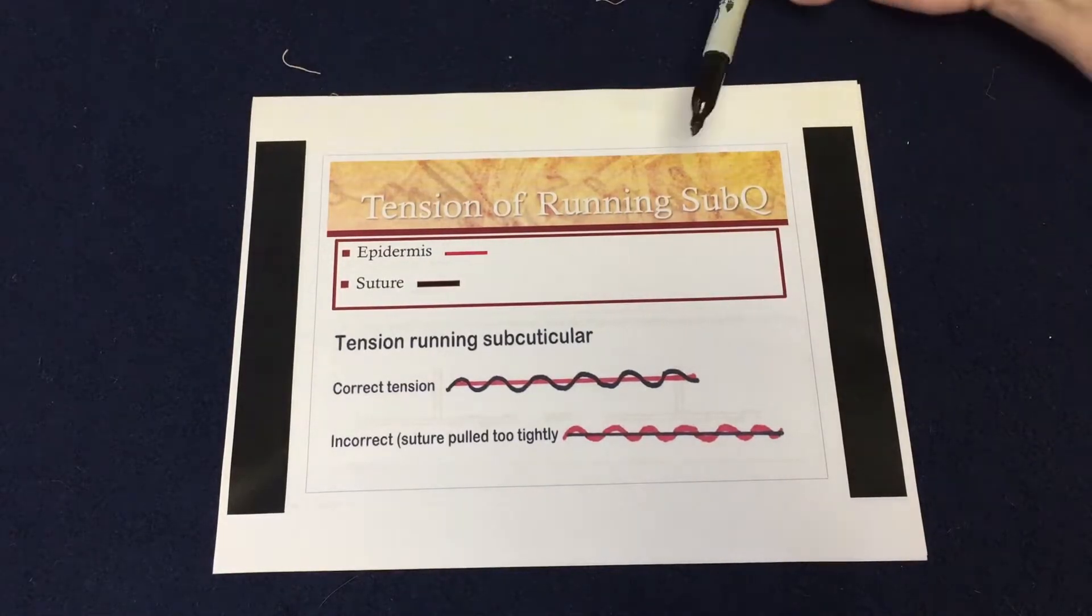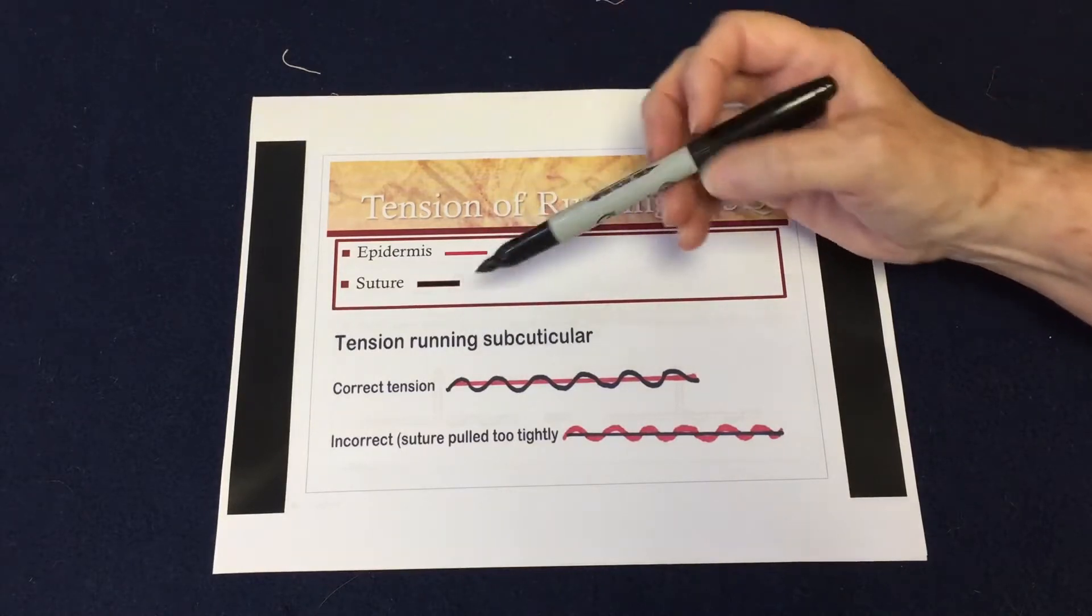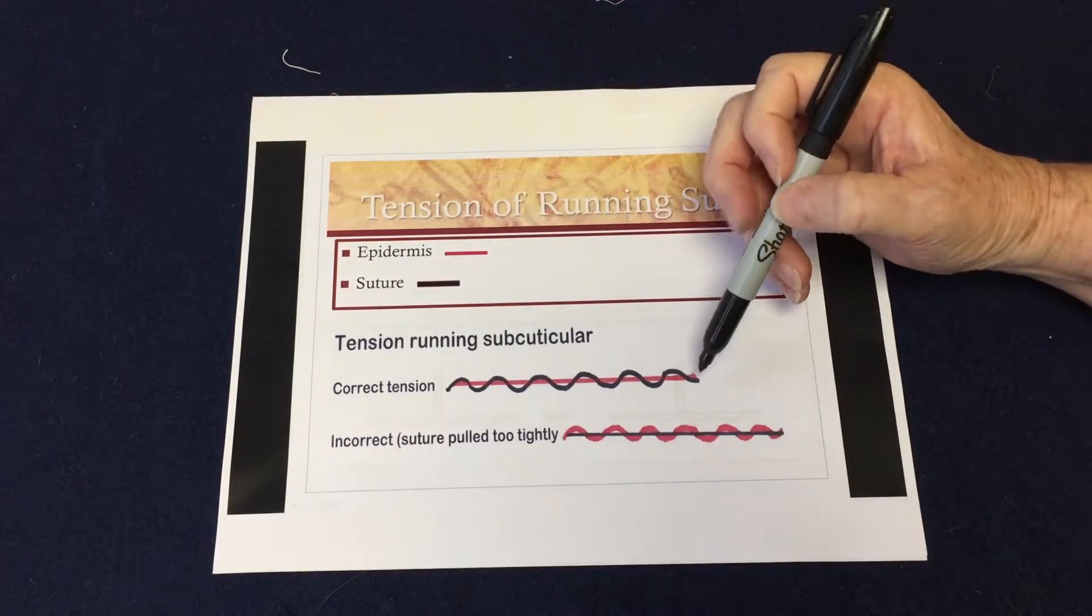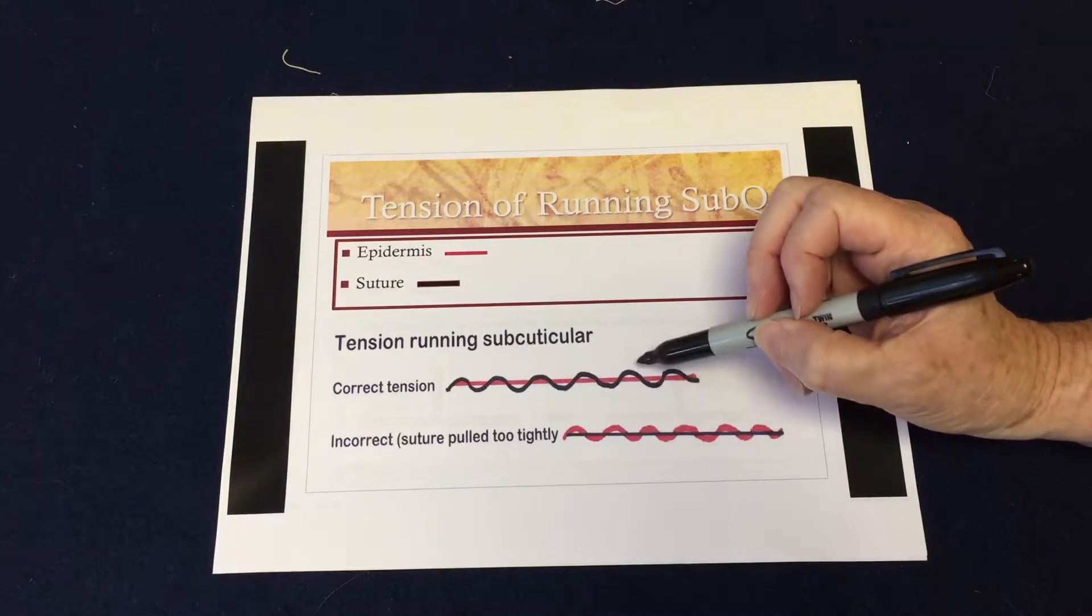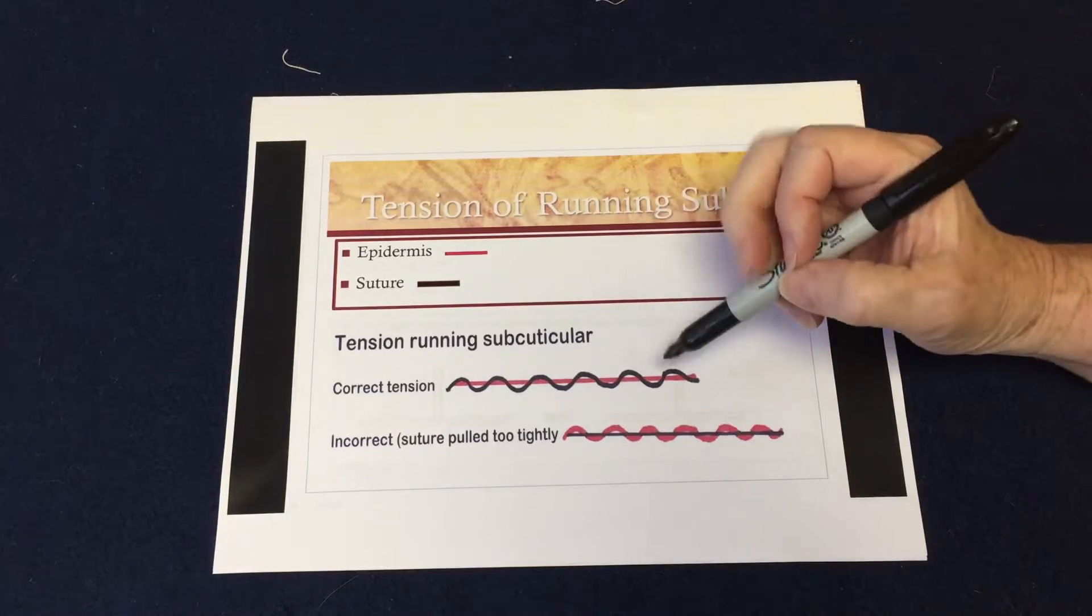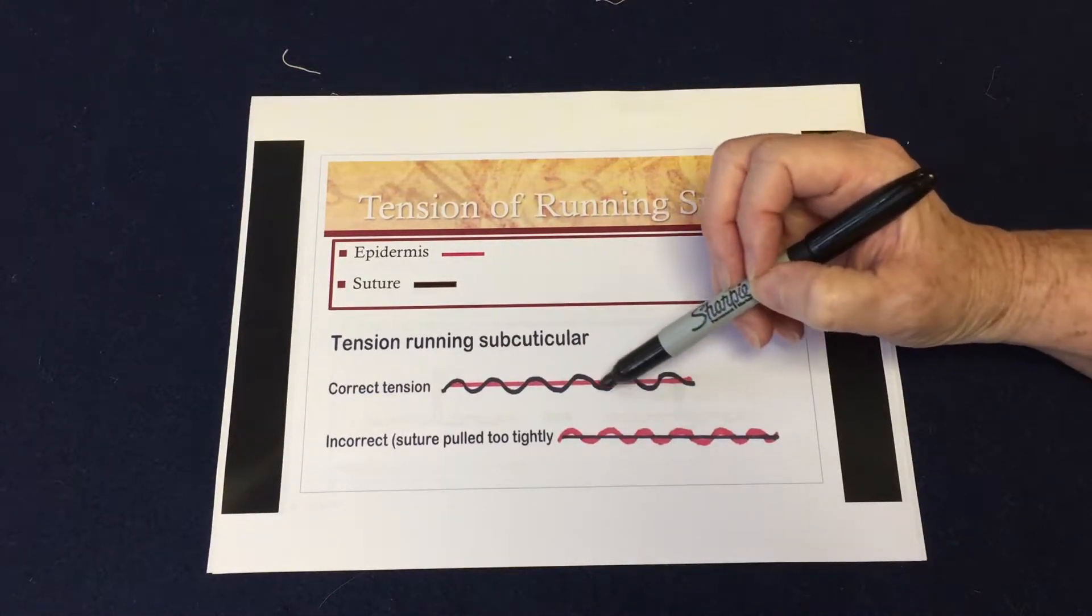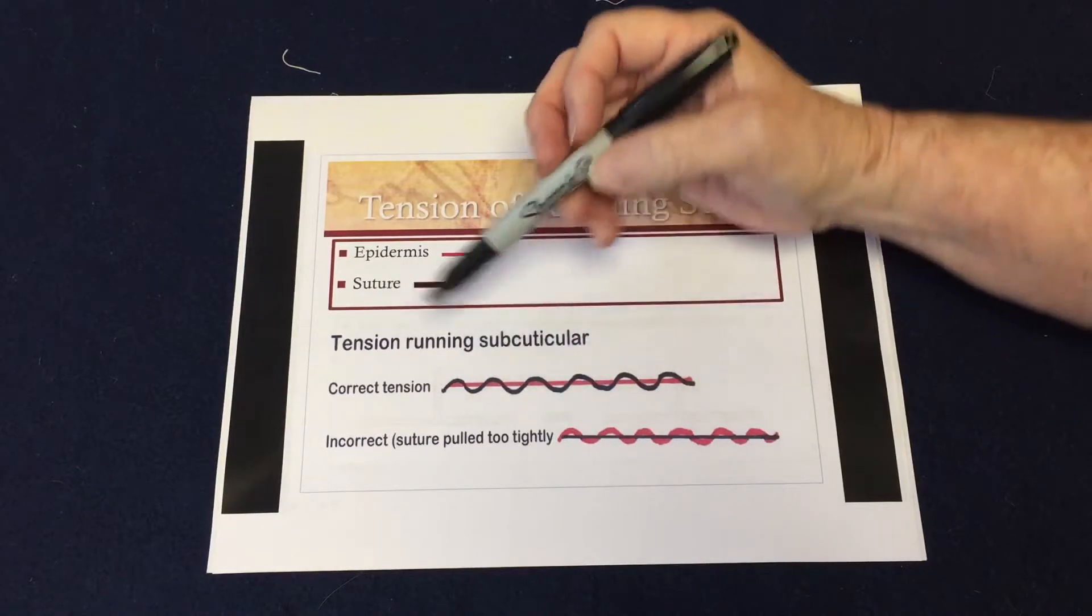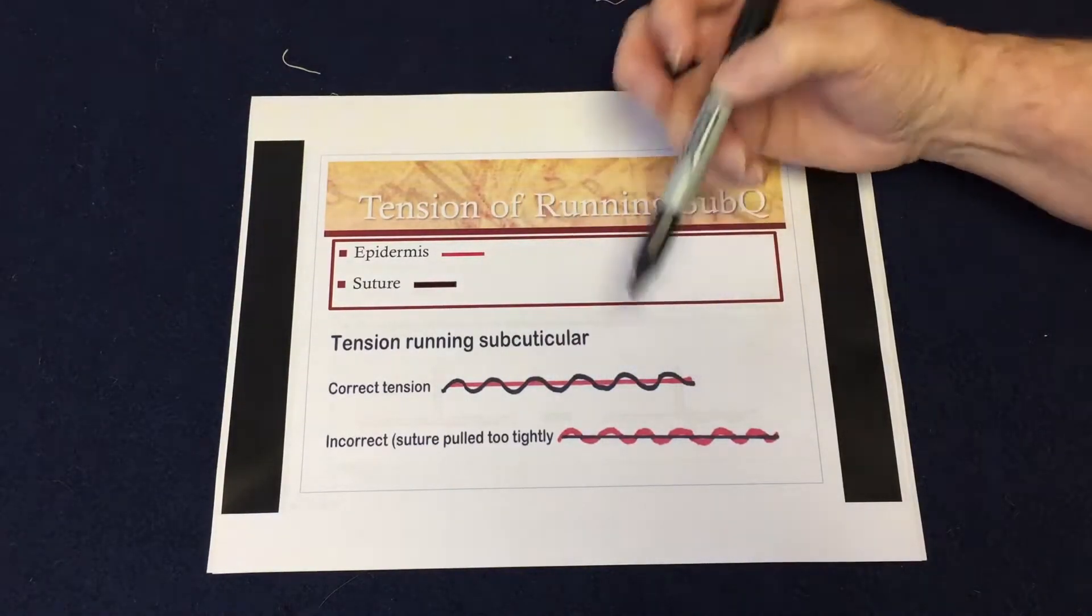When you're doing the running subcuticular, the black is your suture, the red is your incision. I like it when you have a curved needle that you're going in like this, and the curved needle is taking a bite there to give you a nice deep bite of the dermis. So you're going along with that. This is if you could see under the surface of the skin, this is what it would look like. So you have your incision edges that you've got to meet very nicely.